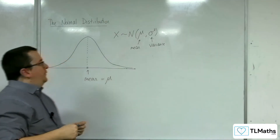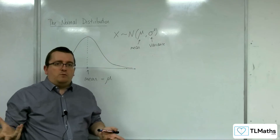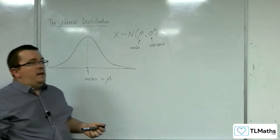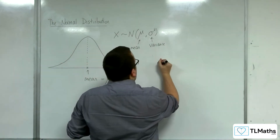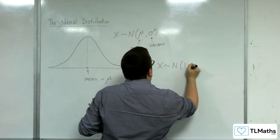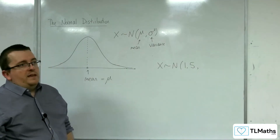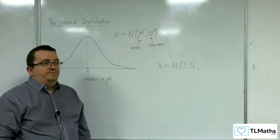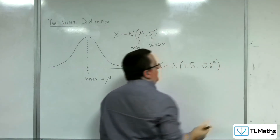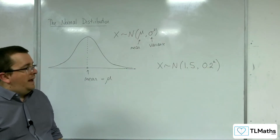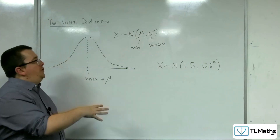For example, if we were talking about the heights of 17-year-olds in the UK, the mean height might be 1.5 meters. We'd write 1.5, and then the variance — if the standard deviation is 0.2 meters, then the variance is 0.2 squared. That is how we would write down that distribution.